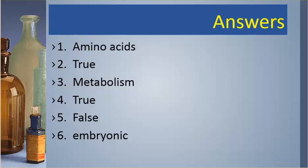Answers. Number one was amino acids. Number two is true. Number three is metabolism. Number four is true. Number five is false. Number six is embryonic.